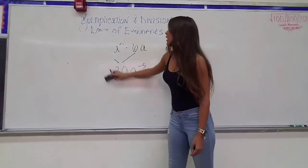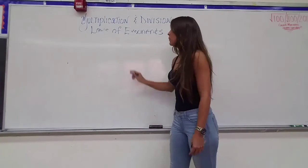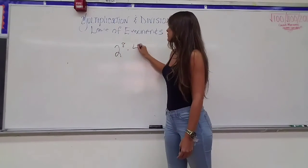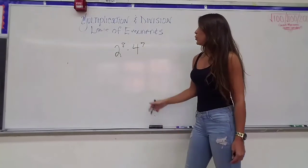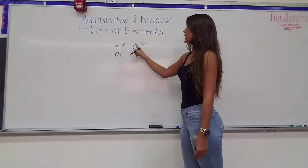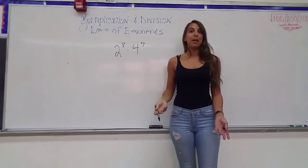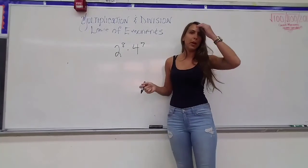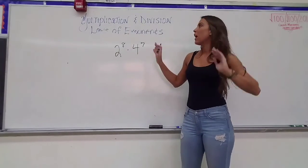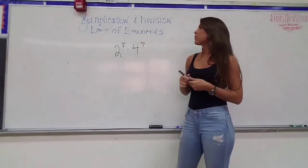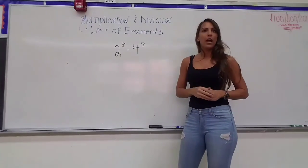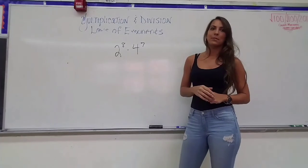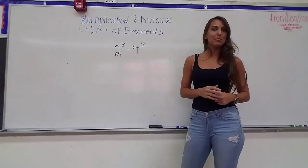If you had an example where the bases are not the same — for example, 2 to the 8th power times 4 to the 7th power — you can't just add the exponents, because the rule says keep the base. If you have two different bases, which one do you keep? There is a way to do this, but that's for another video. So look for the video that shows how to multiply expressions with different bases. If you have any questions, please feel free to ask.